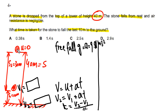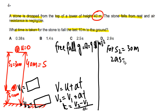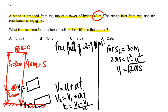To find v1, we use s2 = 30 m with initial velocity u = 0. Using v² = u² + 2as, we get v1 = √(2 × 9.81 × 30), which gives v1 = 24.3 m/s.